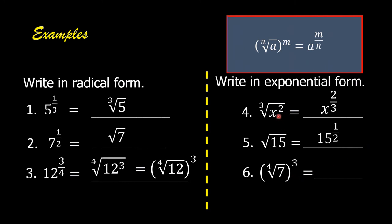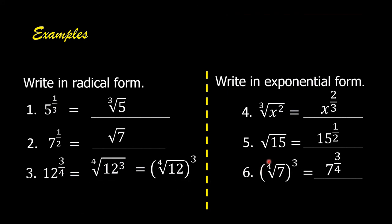In number 6, we are going to use this rule: open parenthesis, nth root of a, close parenthesis, raised to m, is equal to a raised to m over n. The index n is the denominator of the fractional exponent, and m is the numerator of the fractional exponent. So the answer is 7 raised to the exponent of 3 over 4. The index 4 is the denominator of the fractional exponent, and 3 is the numerator of the fractional exponent.